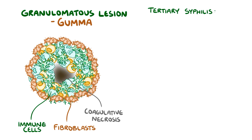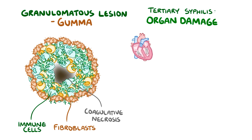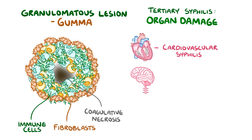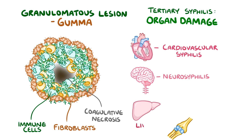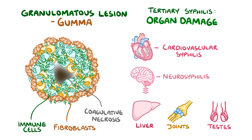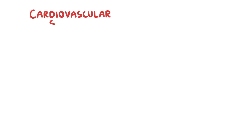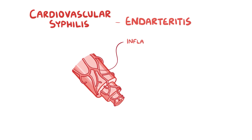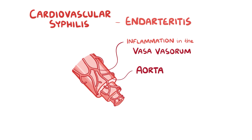In tertiary syphilis, various organs get damaged, like the heart and blood vessels, which is called cardiovascular syphilis; the brain and spinal cord, called neurosyphilis; and also the liver, joints, and testes. In cardiovascular syphilis, there's endarteritis, which is inflammation of the tiny arterioles called vasa vasorum, which supply blood to large arteries like the aorta. The result is that parts of the aorta are damaged, resulting in aortitis, or inflammation of the aorta, and this can cause aortic aneurysms.